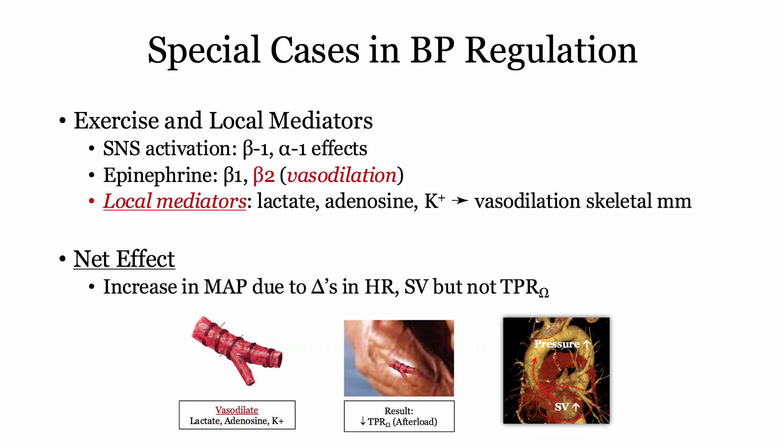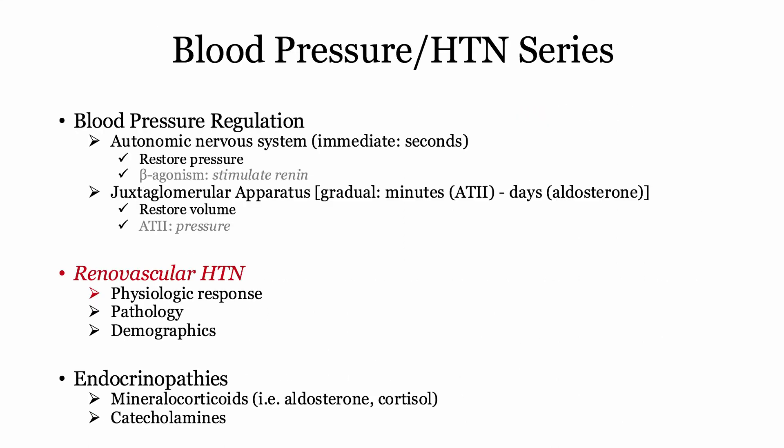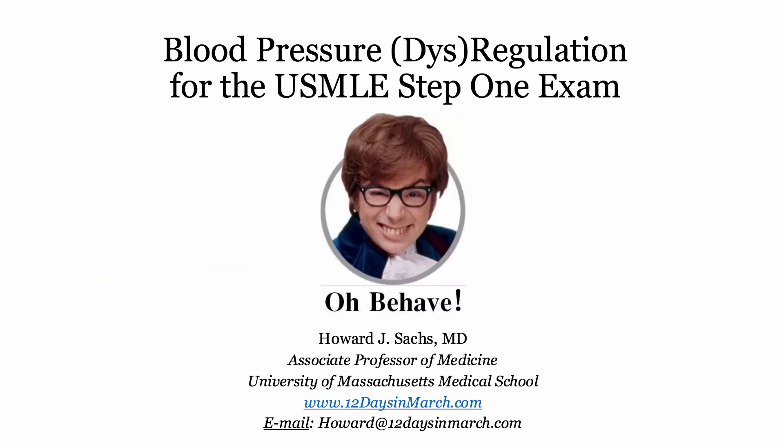The net effect is a relatively minor increase in mean arterial pressure during exercise as a result of increased cardiac output. And here is a summary of those four special scenarios in blood pressure regulation. In the remainder of this series, we'll explore renovascular hypertension and conclude with the endocrinopathies. And that will do it for this presentation on blood pressure regulation. If you have any questions or concerns, drop me a post. Thank you.